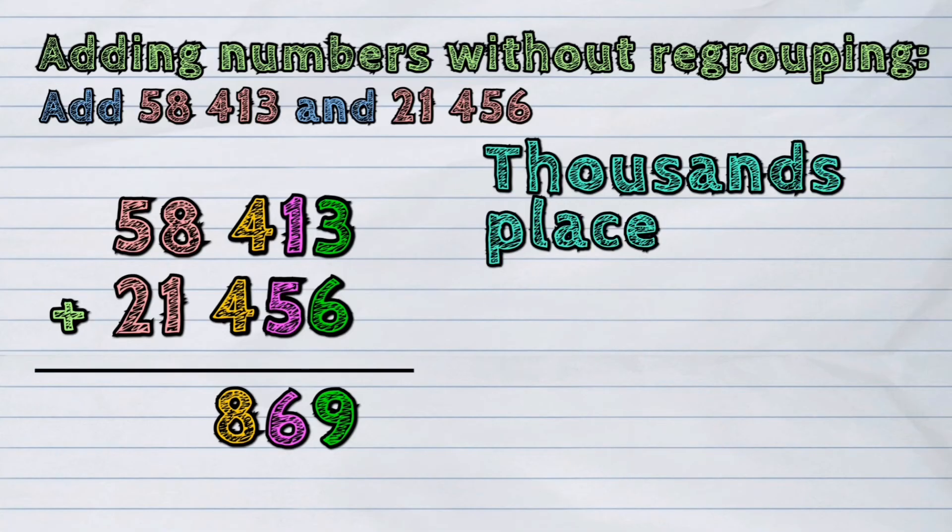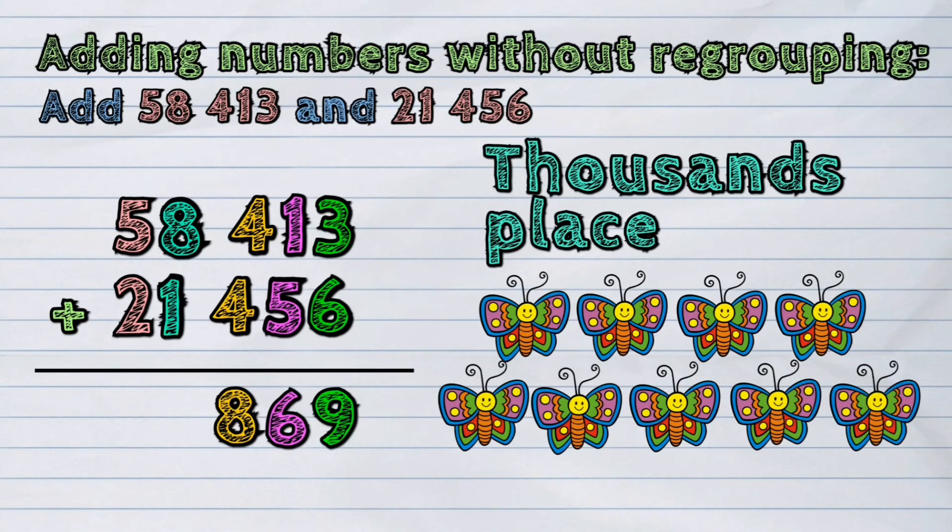Next, from the 1000's place. Adding 8 and 1 will give the sum of 9.